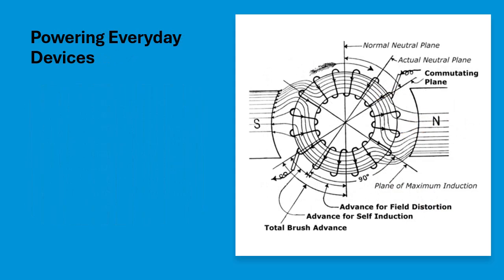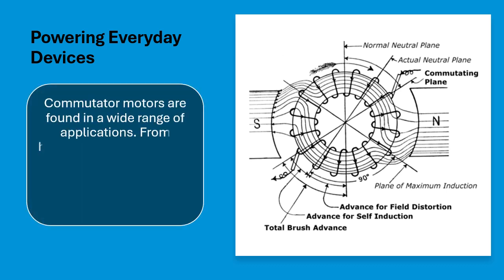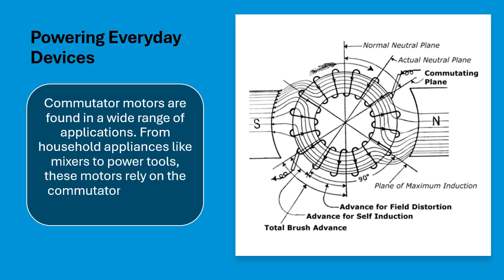Powering everyday devices. Commutator motors are found in a wide range of applications — from household appliances like mixers to power tools. These motors rely on the commutator's ability to switch current efficiently.